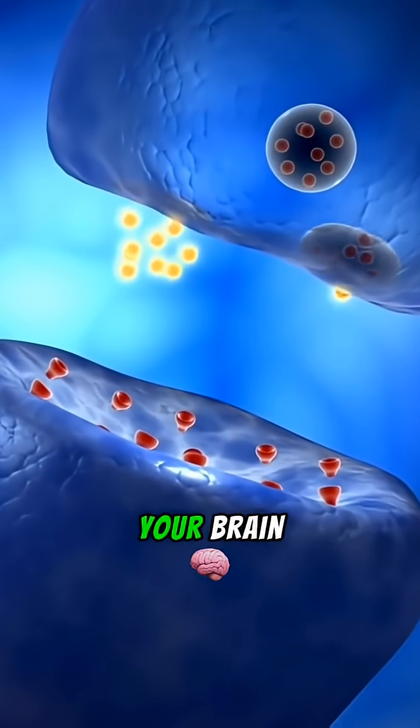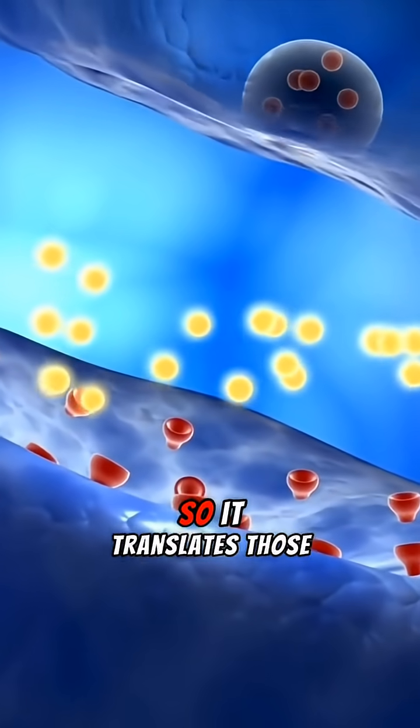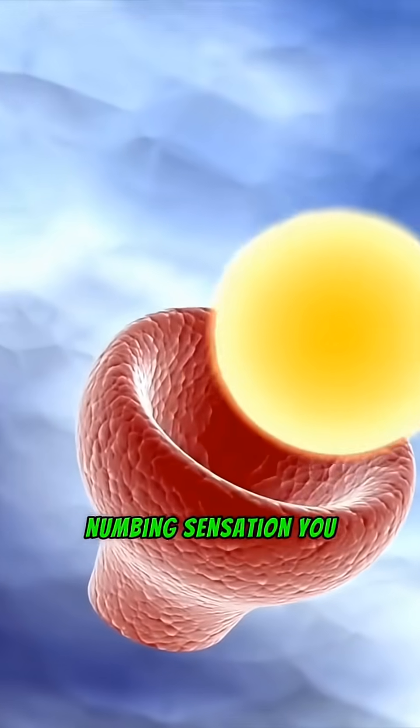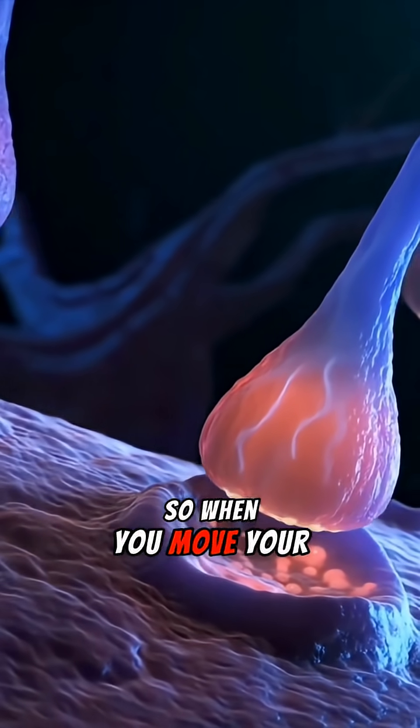When those chaotic signals reach your brain, it doesn't know how to interpret it. So it translates those scrambled signals into that strange static numbing sensation you feel.